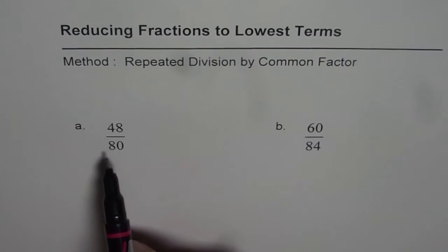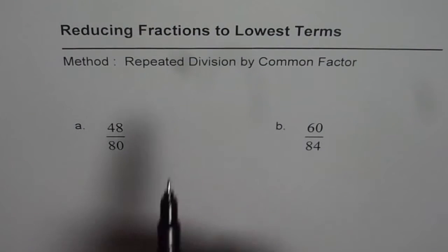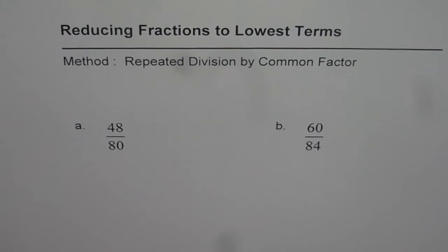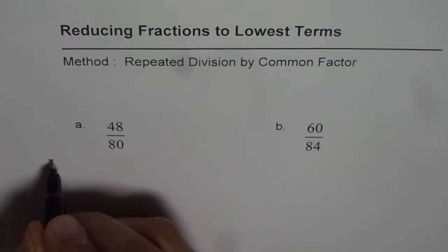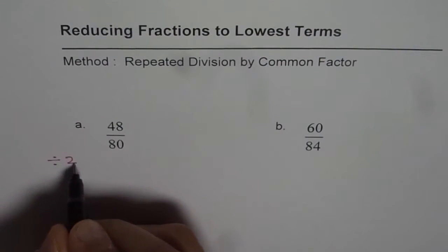Now let me start with 48 over 80. When I say repeated division means I am just looking for a number which can divide into both numerator and denominator. Now as I see both are even numbers so I will start with dividing by 2. So let me first divide by 2 both the numbers.